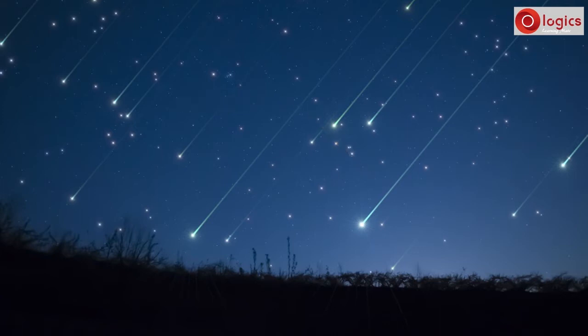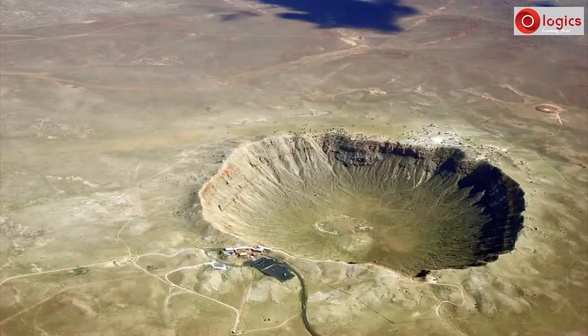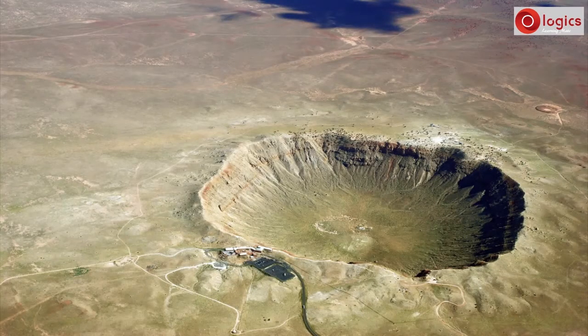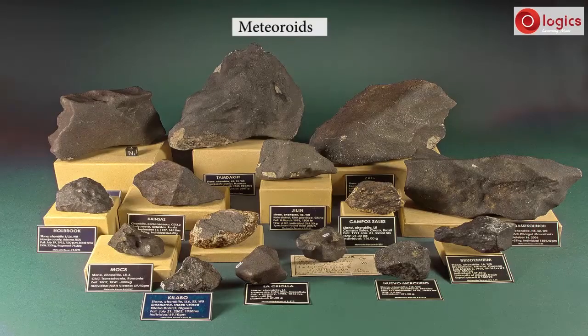Some meteoroids survive their journey through Earth's atmosphere and fall on the Earth's surface, creating craters. They are called meteorites.